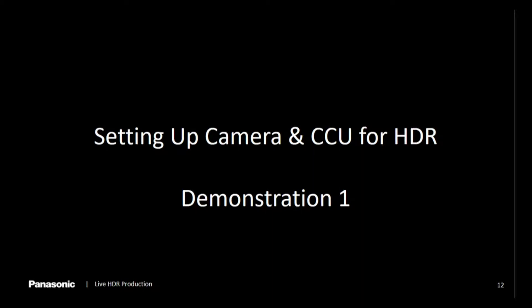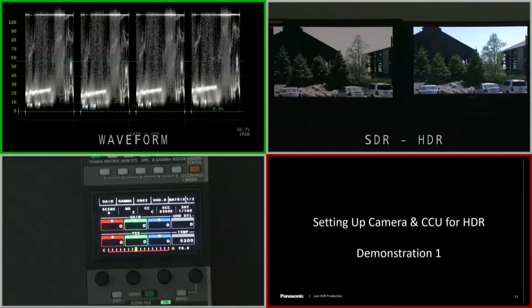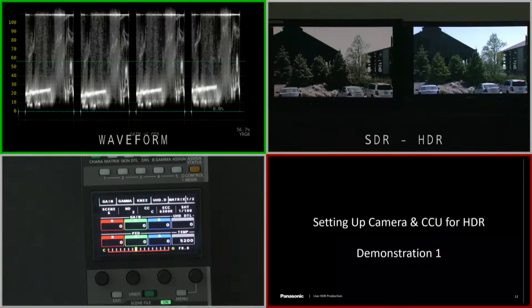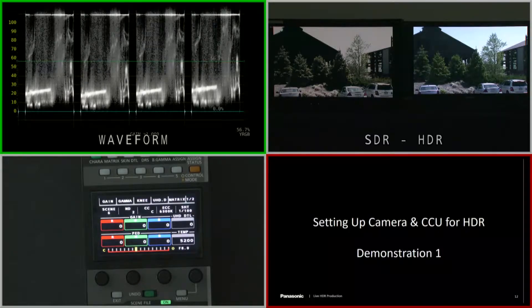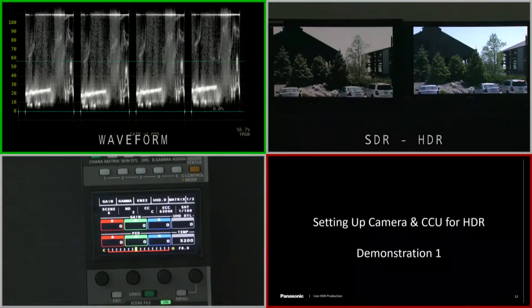The first thing I want to show you is setting up the camera for HDR, because there are a lot of different choices and you want to get these set up. If you get a camera from rental — and a lot of these cameras are in rental — it's going to arrive and hopefully they'll have it set up for you. But if they didn't, or if you didn't tell them you're going to do an HDR job, you need to go and check the settings and the output. Luckily, it's not that hard to do once you know how.